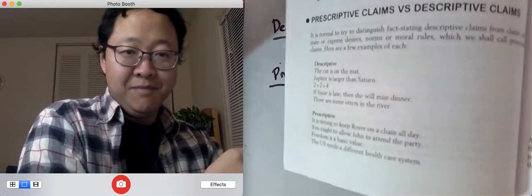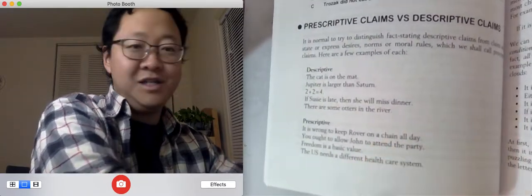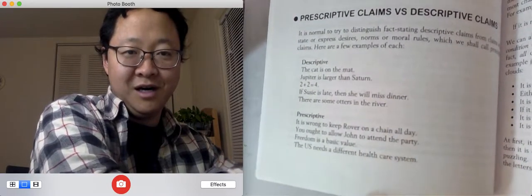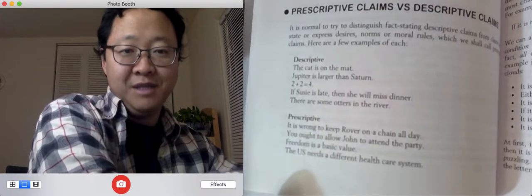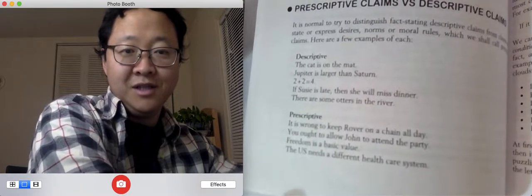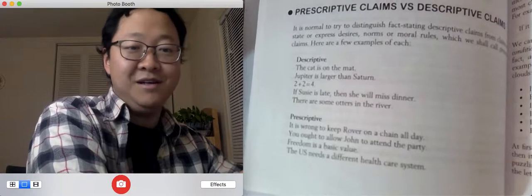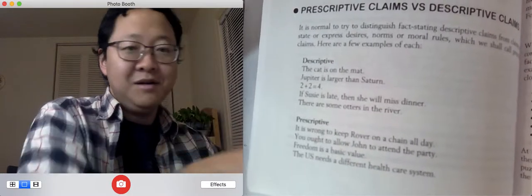Prescriptive claims: It is wrong to keep Rover on the chain all day. You ought to allow John to attend the party. Freedom is a basic value. The U.S. needs or should have a different healthcare system. Now notice like this one,